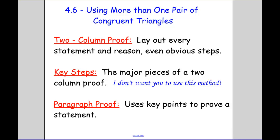Today we're going to be talking about section 4.6, which really has two pieces to it. We're going to be talking about using more than one pair of congruent triangles — using our congruent triangles to then say something about other parts. And then we're also going to be talking about a new type of proof.